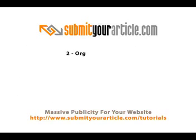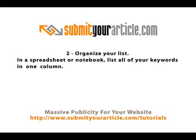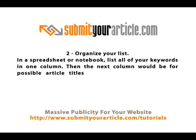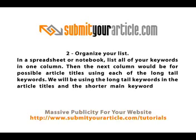Once you have your main keywords sorted, it's time to organise your list. In a spreadsheet or notebook, list all of your keywords in one column. The next column would be for possible article titles using each of the long tail keywords. We'll be using the long tail keywords in the article titles, and the shorter main keywords in the resource boxes.